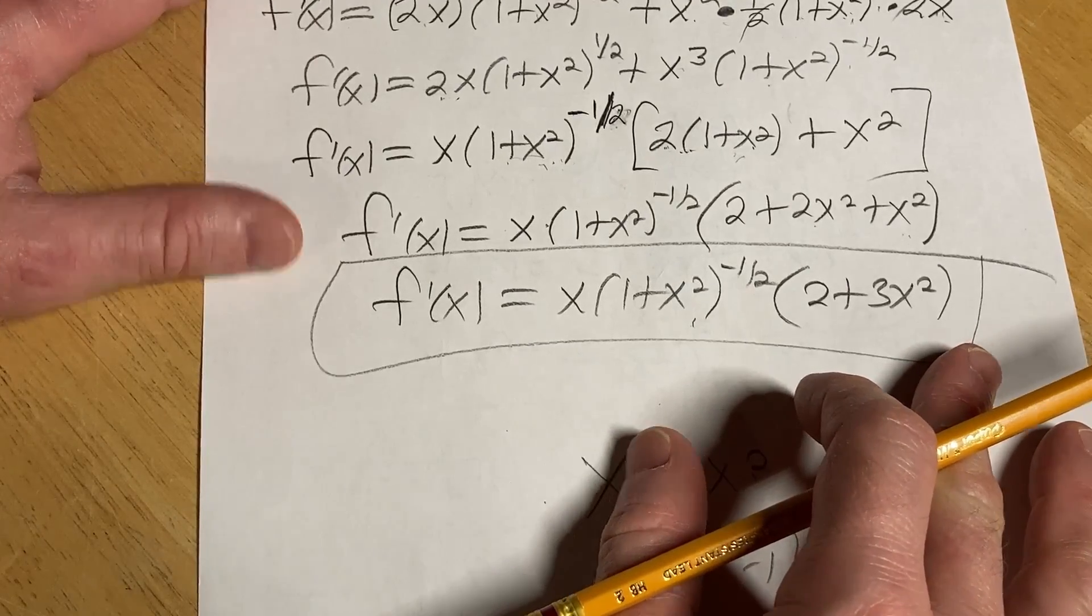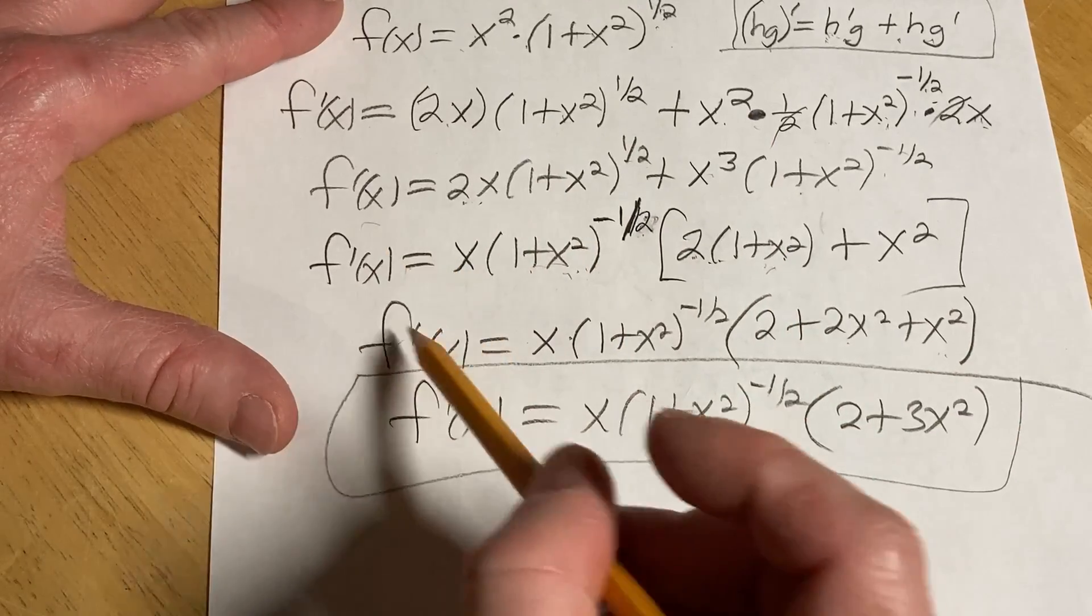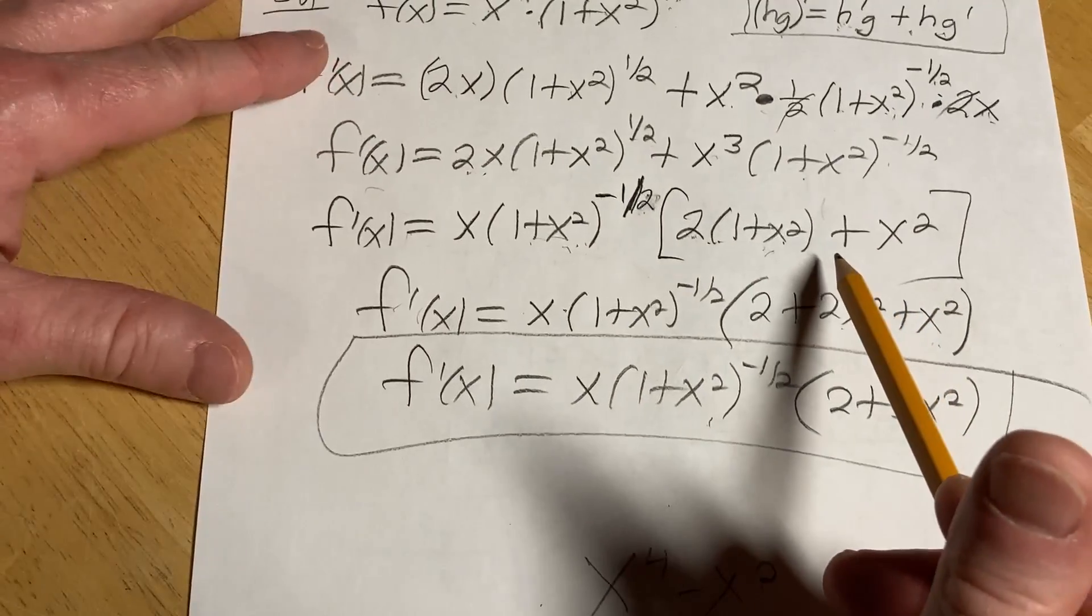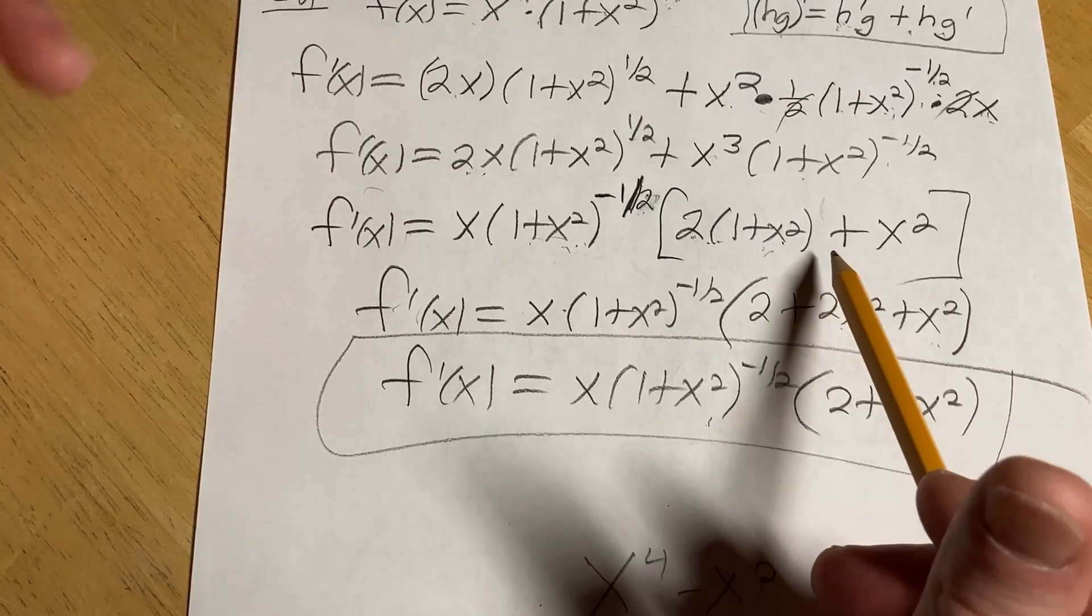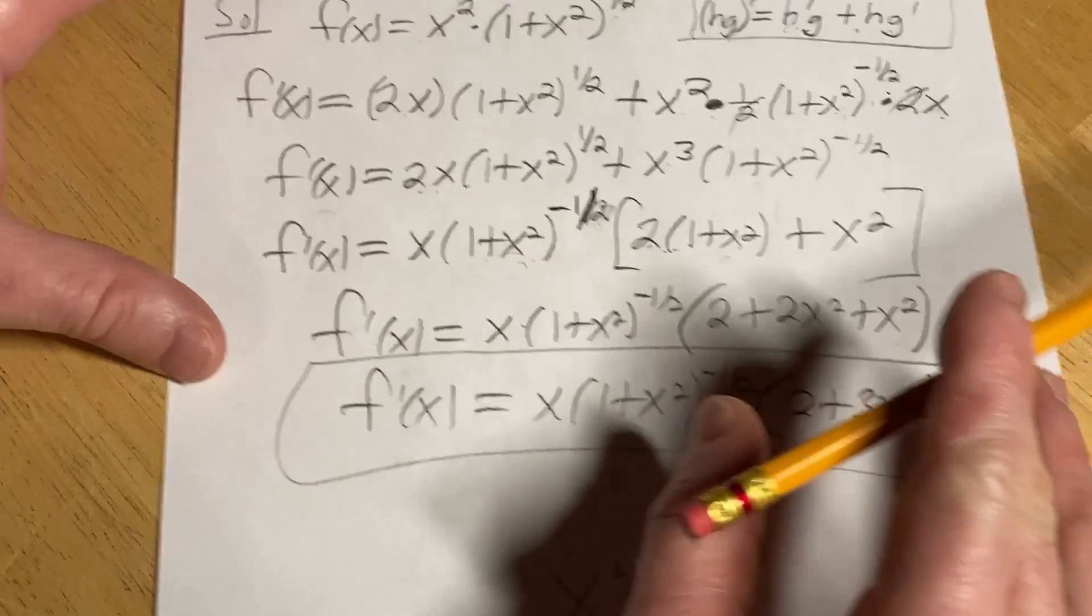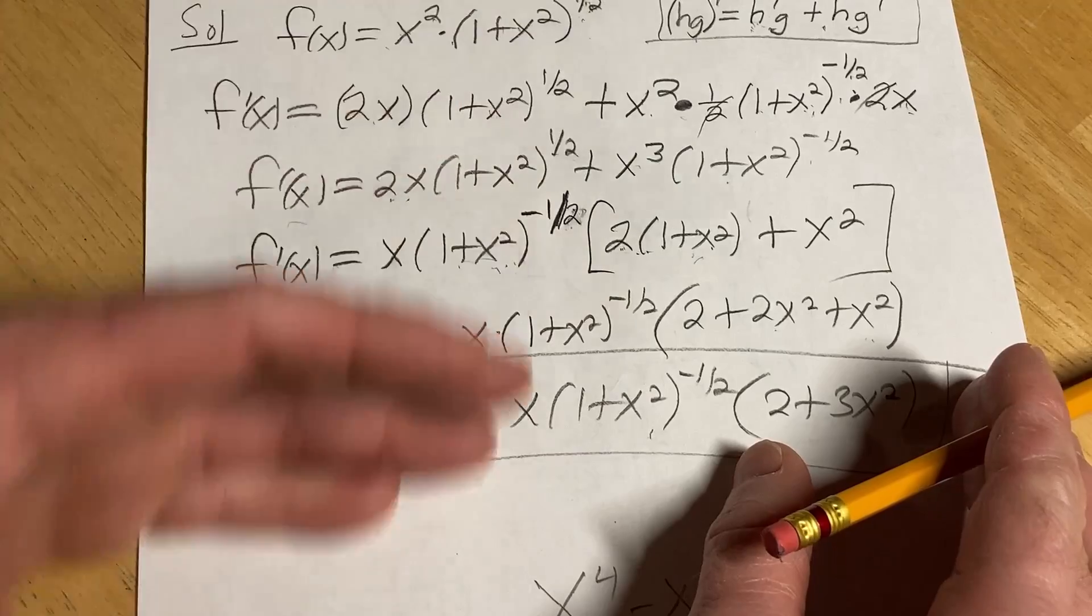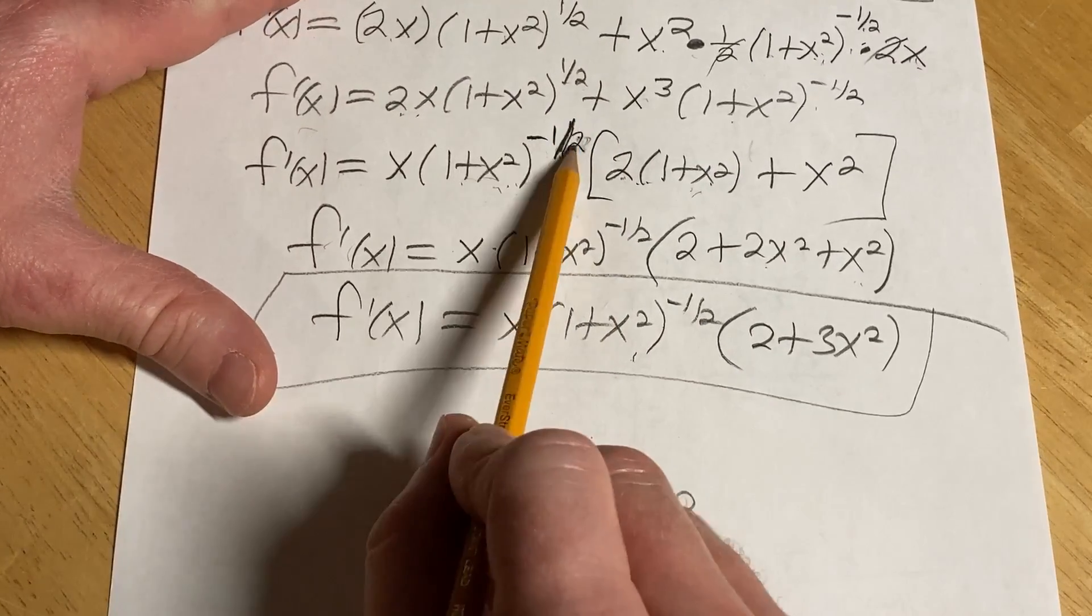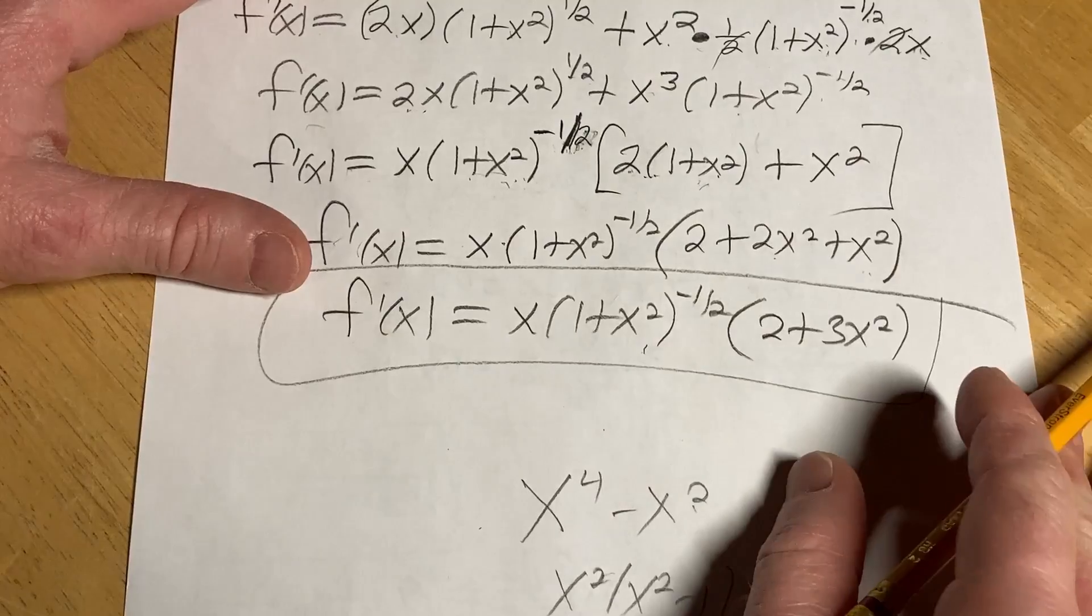So yeah, really interesting problem. This technique of factoring is super useful and it comes up a lot in calculus when you're doing problems like when you're finding critical numbers or possible inflection points. When you're doing those things in calculus, this type of factoring is very beneficial. Remember, just take out the one that has the smallest exponent and it will work out. Things will work out for you.